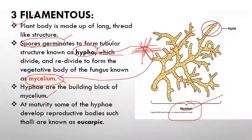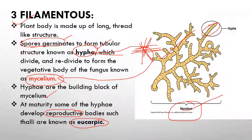At maturity, during the time of reproduction, some of the hyphae become active reproductively and act as reproductive bodies — this type of fungus is known as eucarpic, meaning only a small portion of the thallus takes part in reproduction. In contrast, in holocarpic fungi the whole thallus or whole cell gets converted into a reproductive body. This is the key difference between holocarpic and eucarpic fungi.